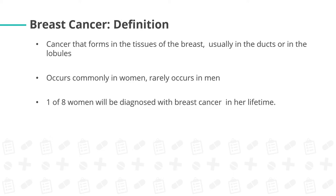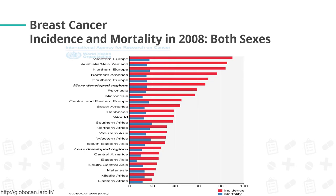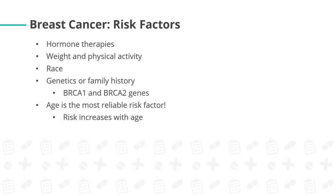Now let's move to breast cancer. This is a type of cancer that forms in the tissues of the breast, usually in the ducts or in the lobules. It occurs commonly in women and rarely in men. One out of eight women will be diagnosed with breast cancer in her lifetime. Western Europe has the highest incidence for breast cancer. Risk factors include hormone therapies, weight and physical activity, race, genetics or family history — including genes like BRCA1 and BRCA2 — and age, which is the most reliable risk factor as risk increases with age.